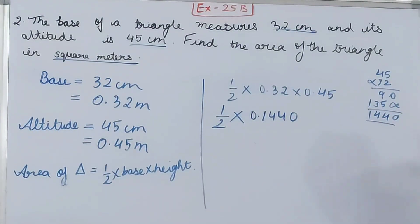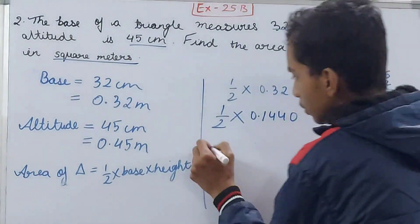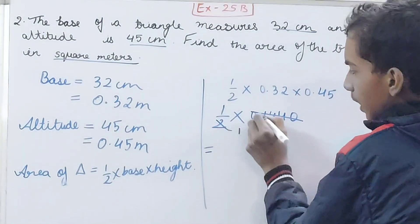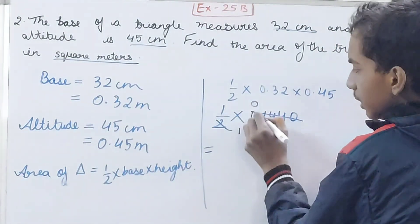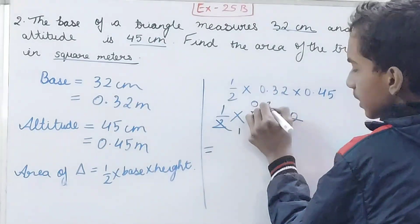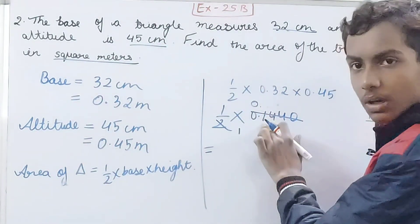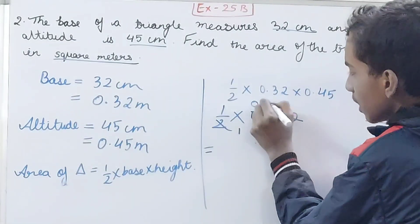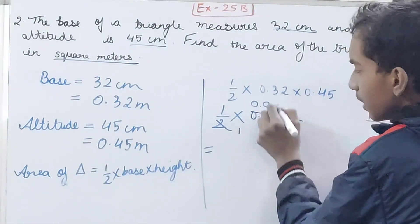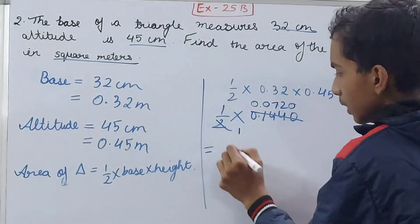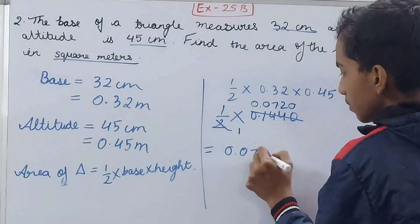Dividing 0.1440 by 2: first zero, so zero. Then decimal point. 1 will not go into 2, so put another zero. 14 ÷ 2 = 7, 4 ÷ 2 = 2, and zero. So we get 0.0720.